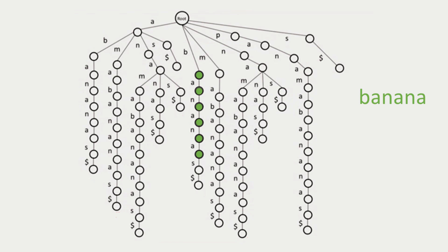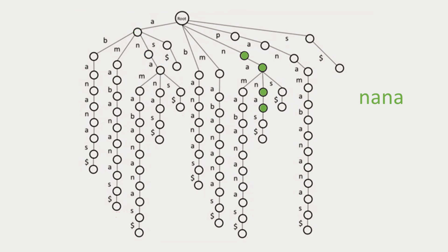For example, with the pattern 'banana,' we know it occurs in 'panamabananas.' Starting at the root, we go to 'b' and can spell it down the path, spelling out the entire string 'banana' and ending at a leaf node. That tells us we were able to spell it out in the suffix trie, meaning it is a pattern match. Next, with 'nab,' which does not occur in 'panamabananas,' we can match the first two letters but are unable to match the third. Similarly, another pattern that doesn't occur can match the first two letters but not the third.